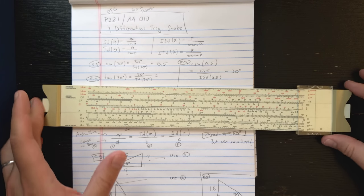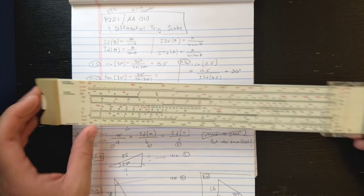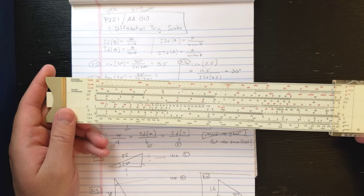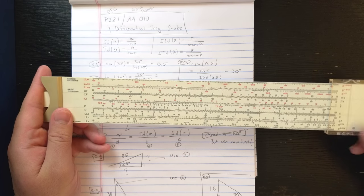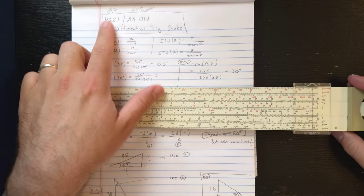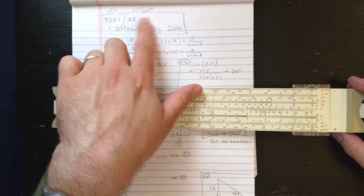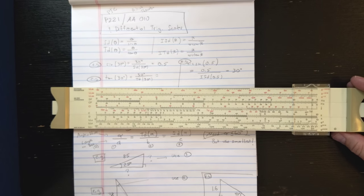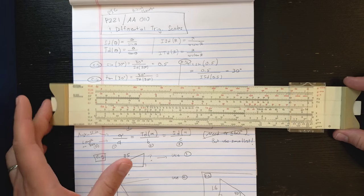Welcome back. I have here a British Thornton AA-010 comprehensive slide rule. This slide rule is also called the PIC or PIC P221. I think British Thornton bought them at some point. This is an interesting slide rule.